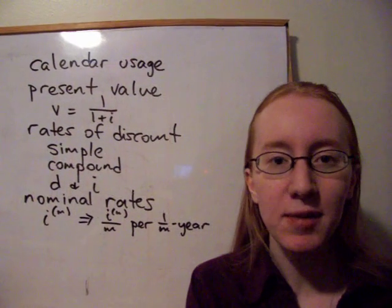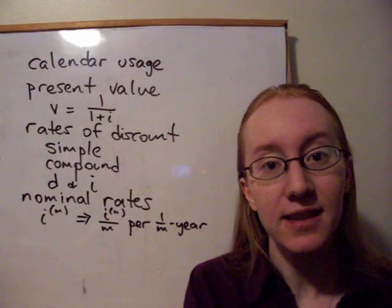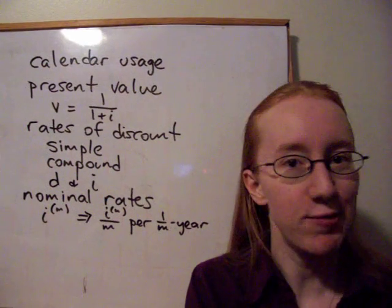The first is exact simple interest, that's what it's called, and that's where we take the exact number of days divided by 365. So, pretty straightforward.